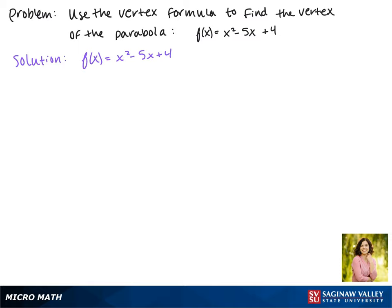So to find the x value of our vertex, we have to use the vertex formula: x = -b/2a. In this case, b is -5 and a is 1.